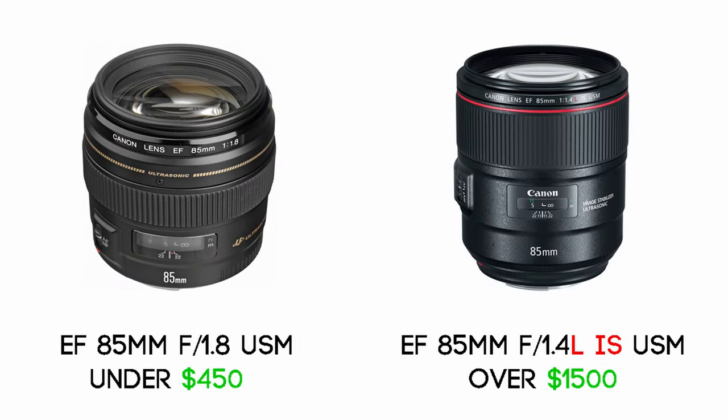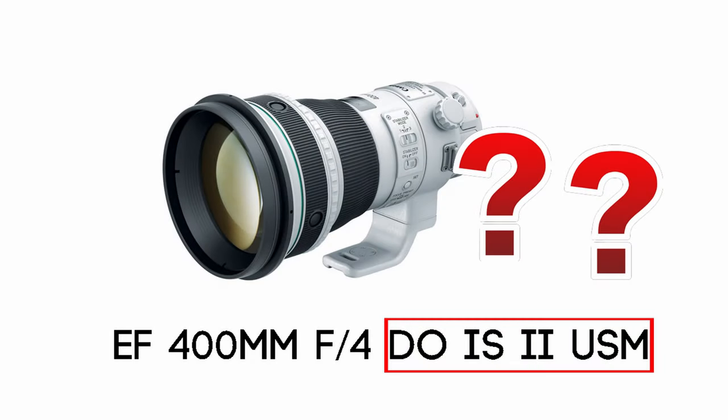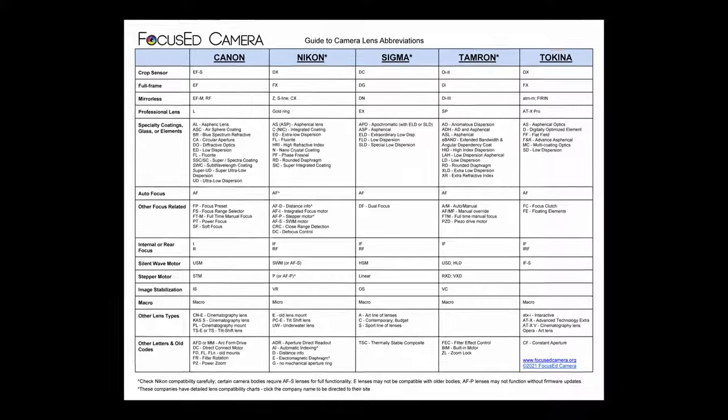As a general rule, additional letters usually mean a better lens. The lens on the right is considered a luxury lens and has image stabilization as well as a wider maximum aperture. However, it might also give you sticker shock. Do you need to memorize all those additional letters and numbers? No way! That's why I made that cheat sheet for you — go download that chart in the description below and take it with you when you go lens shopping.